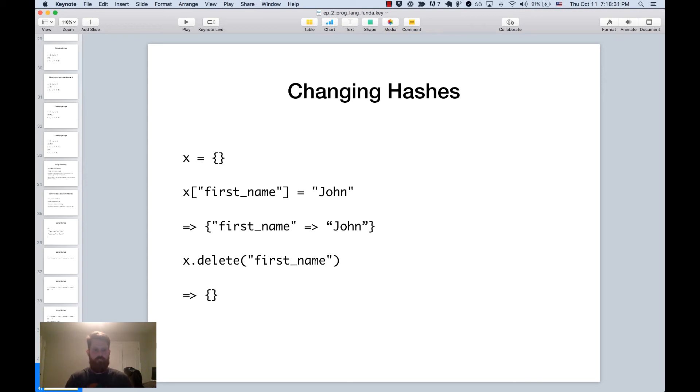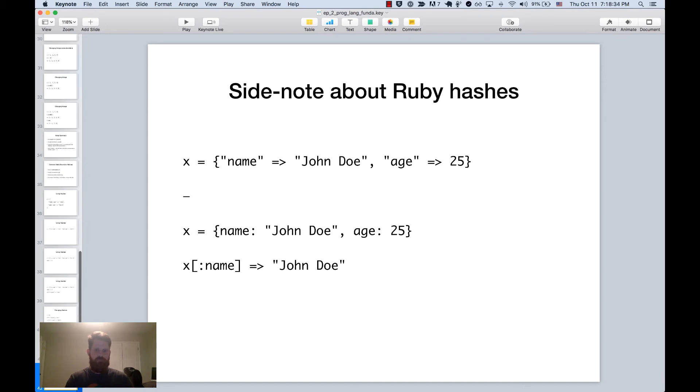So side note for the Rubyists out there there are two ways to create hashes in Ruby. One is using the format that we've been using which is strings followed by an arrow associating the key with the value. And that would be considered an old style hash. Ruby has not necessarily recently but there is a new style of hash or newer which is the one below which uses something called a symbol which is basically a fancy string. And so you would see it formatted like that where it's the name, colon, and then the value. And then when you access you use the colon as well. So instead of our first example where we had double quote name double quote we just use colon name.